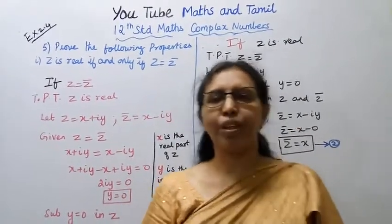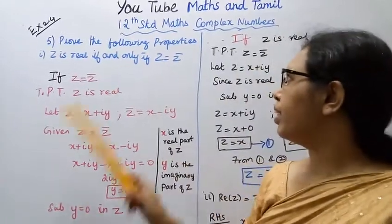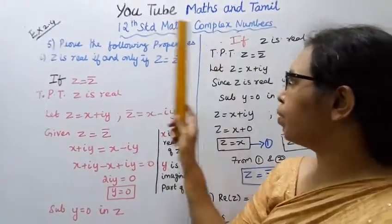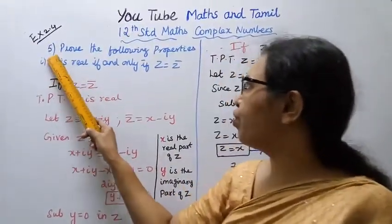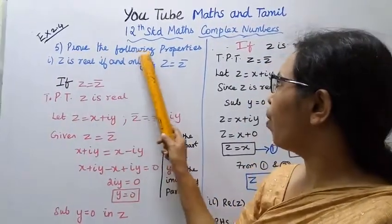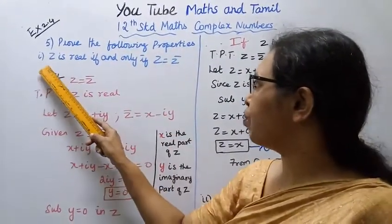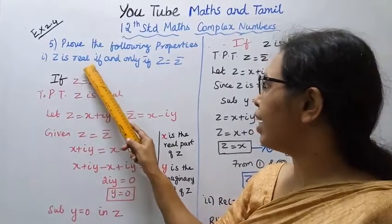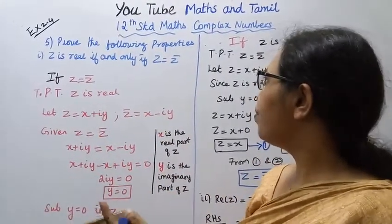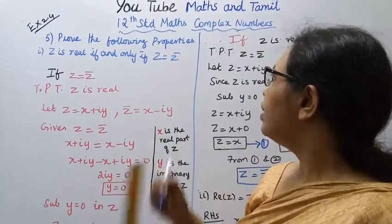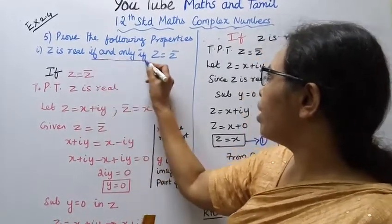Hello students, welcome to Max and Tumult channel. 12th standard Maths, Complex Numbers Exercise 2.4, fifth sum. Prove the following properties. First subdivision: z is real if and only if z equals z̄.